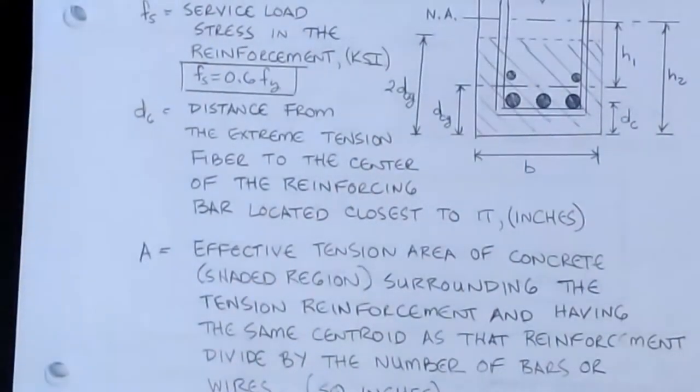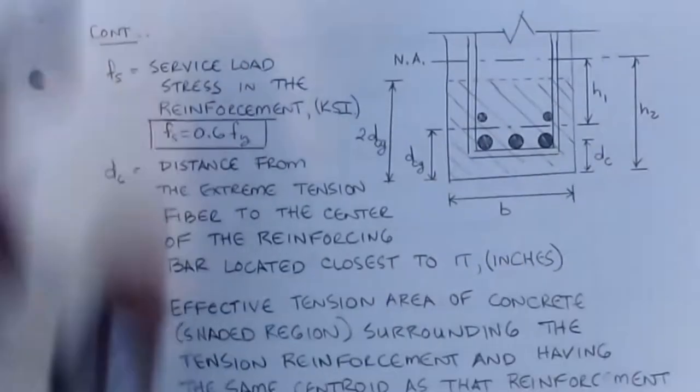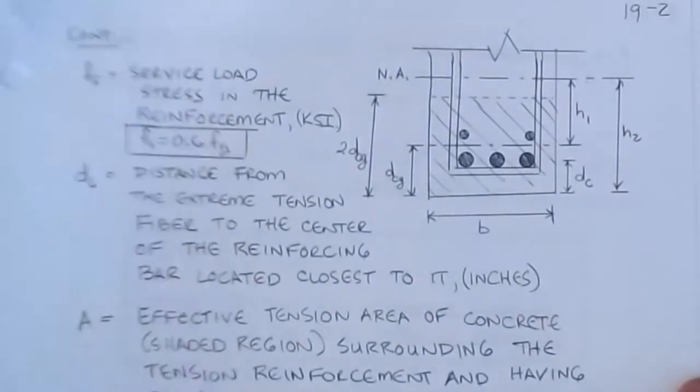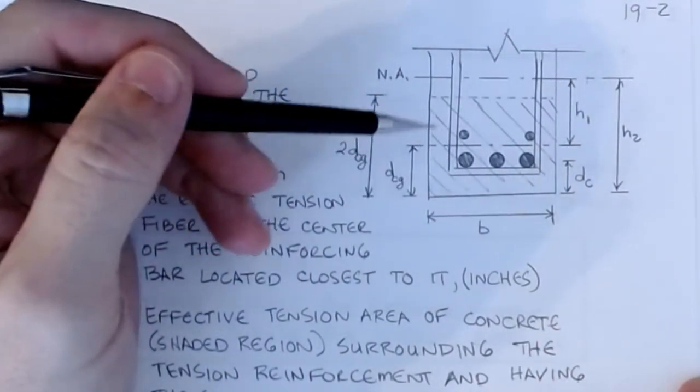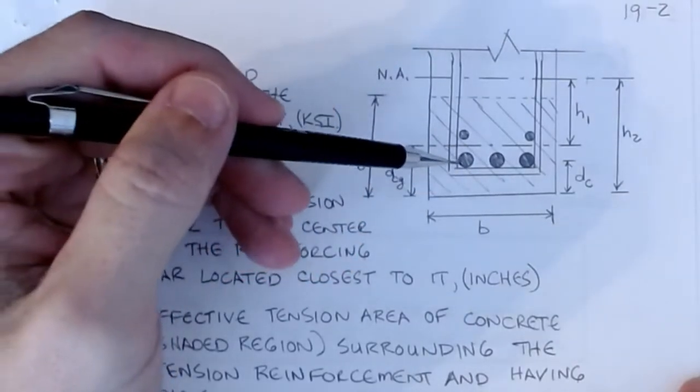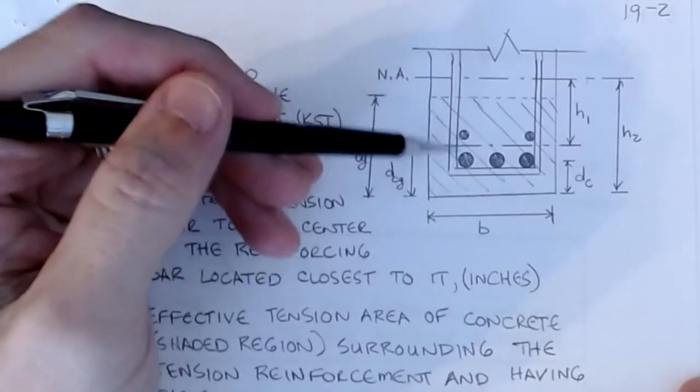One single big bar does not do as good a job in this equation as does multiple little bars spread throughout the cross section. And that's kind of the idea and the concept that we're looking at accommodating here. So here's what the terms are. If we look at it, it's kind of a typical cross section that I have here with the b, and I have just kind of an arbitrary reinforcement pattern, and in this case, it's five bars, three of them are bigger bars, two of them are smaller.